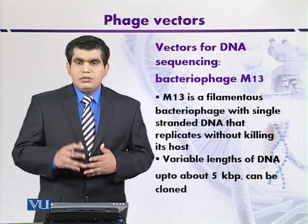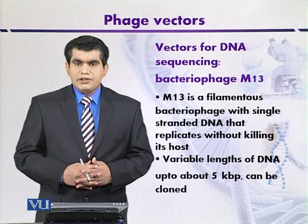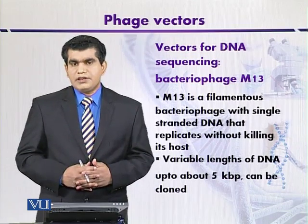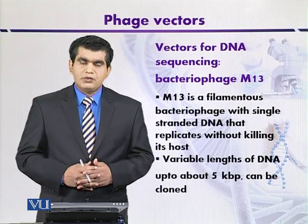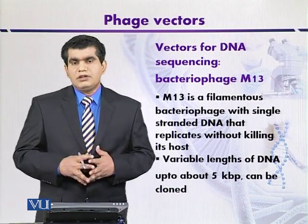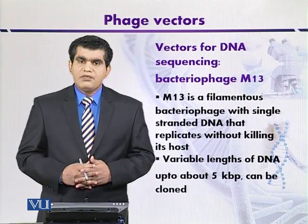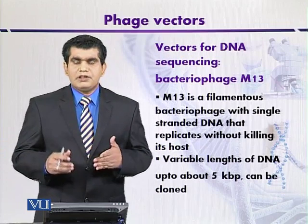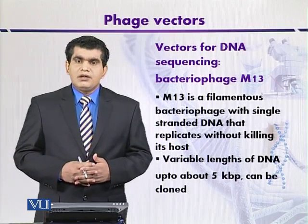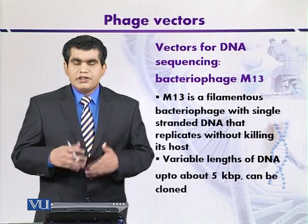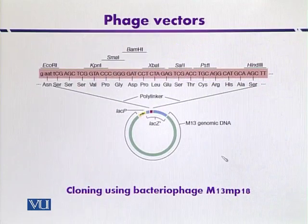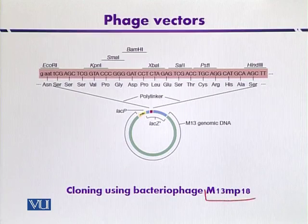Naturally, M13 phages can be used to clone DNA fragments of up to five kilobase pairs. Here we can insert the foreign DNA. Modified M13 phages — one example is M13mp18 — also contain the beta-galactosidase gene that encodes this enzyme, and it acts as a selectable marker. This diagram indicates the map of the cloning vector M13mp18.